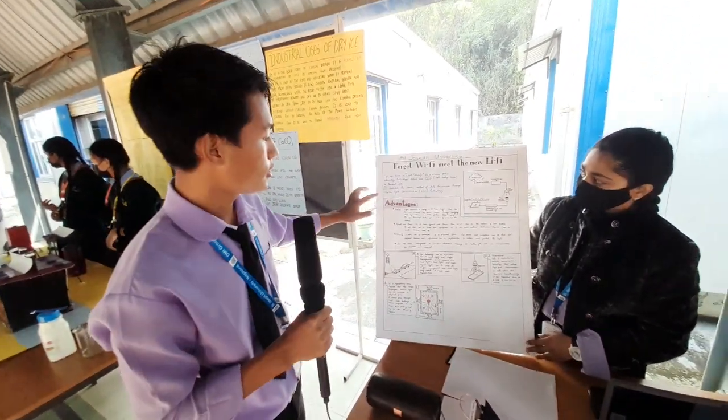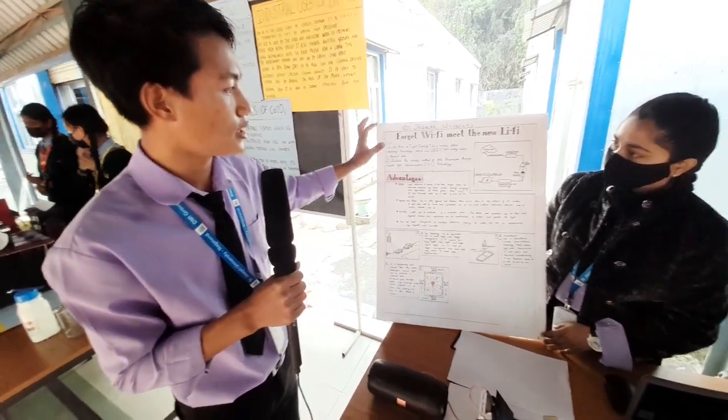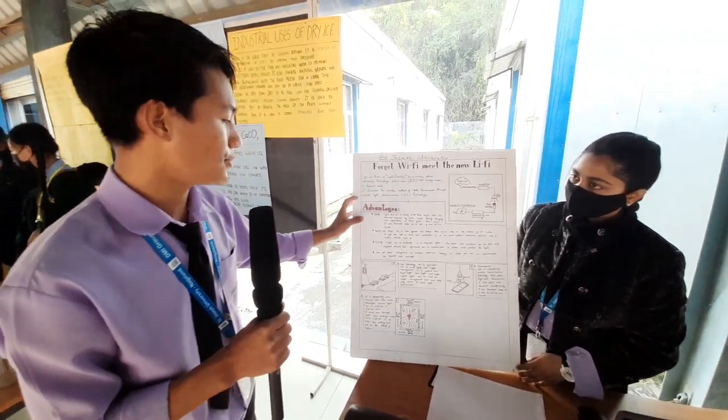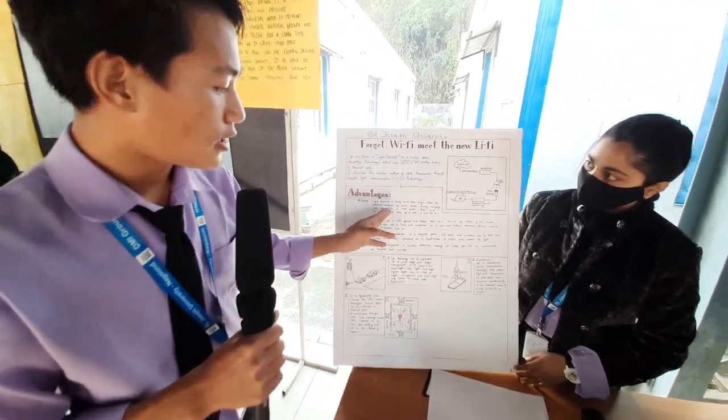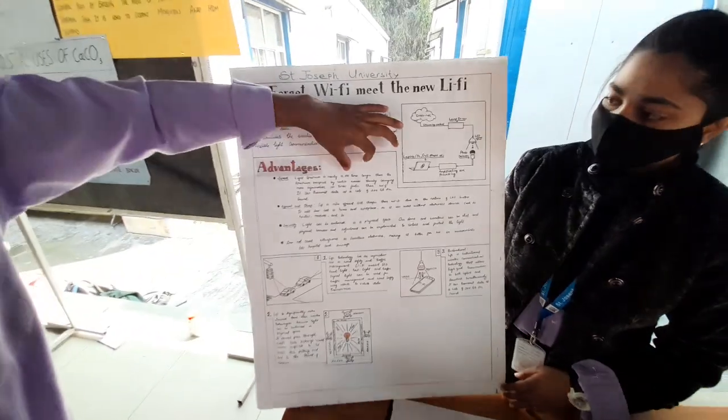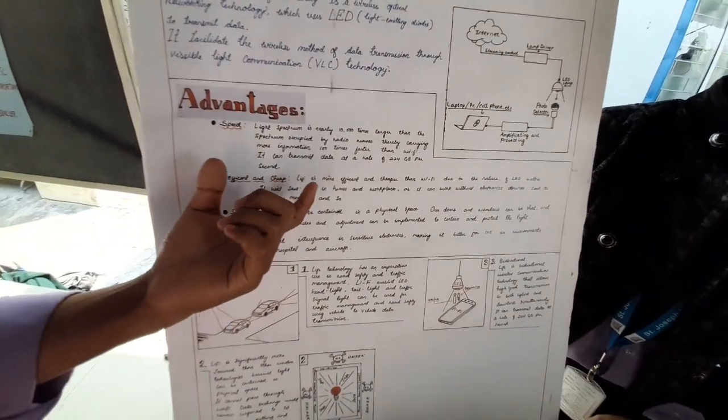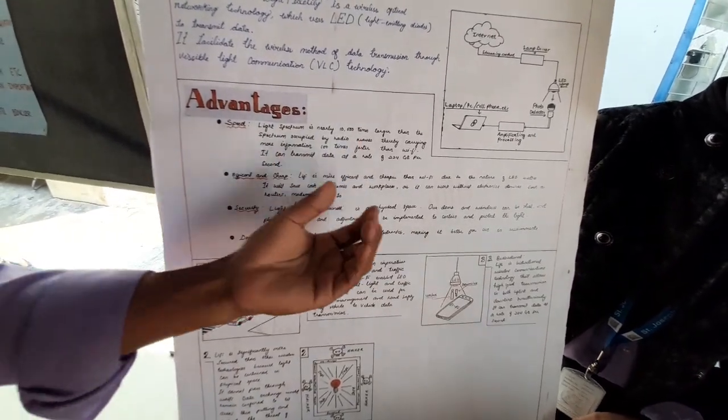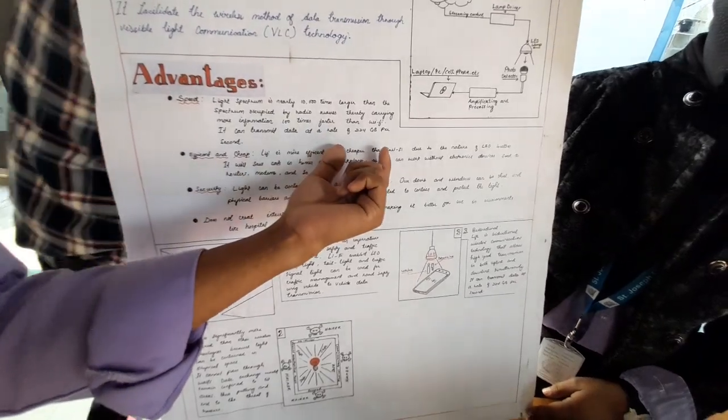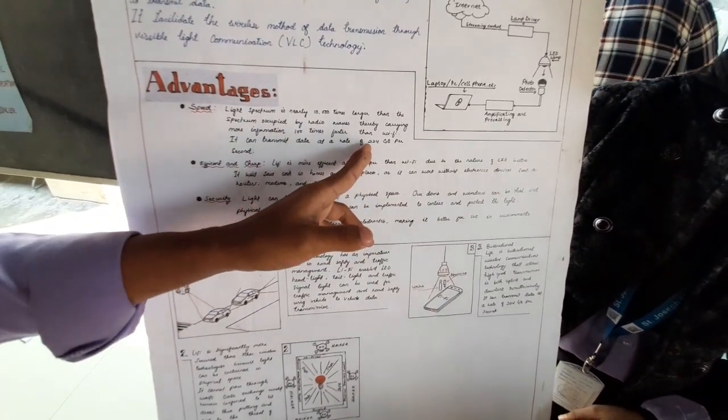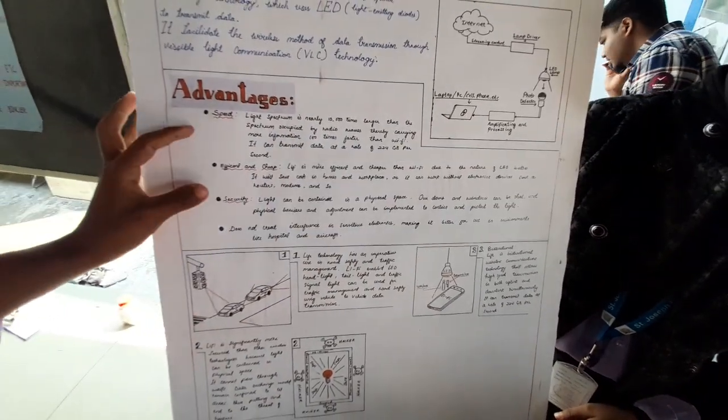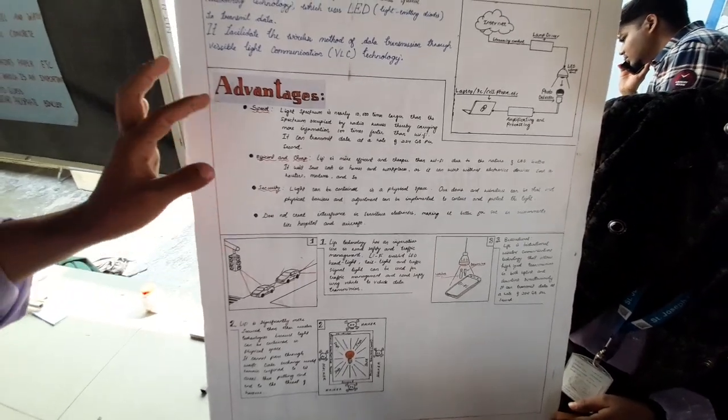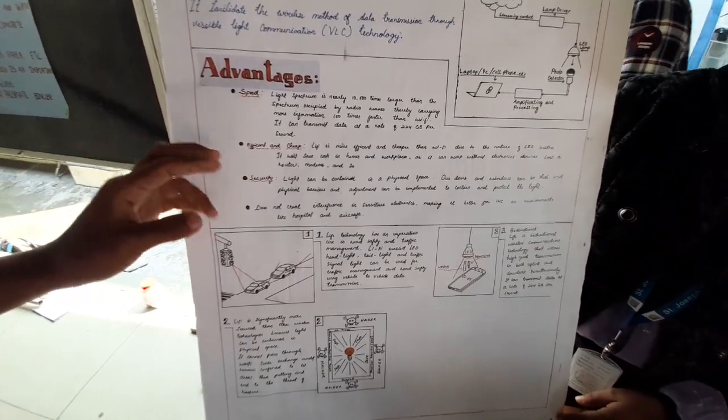Here are the advantages of this Li-Fi technology. First is speed. Its spectrum is 10,000 times larger than that of radio wave, which is why the speed is much faster than the traditional Wi-Fi that we use at home. Its average speed is 224 GB per second, but it can reach up to 300 GB per second.